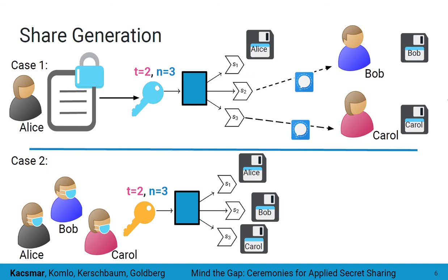For case one, Alice needs to first encrypt the documents she has received, as the files are large enough that she doesn't find it practical to put them through a base mode of secret sharing. After encrypting the files on the laptop she acquired, she uses the decryption key as the secret input into the share generation algorithm. She sets N to three and the threshold to two to ensure redundancy while preventing any single share from being enough to decrypt the files. Alice keeps one share for herself and sends one each to Bob and Carol over a previously established secure communication channel. Bob and Carol, upon receiving their shares, select appropriate storage mechanisms.